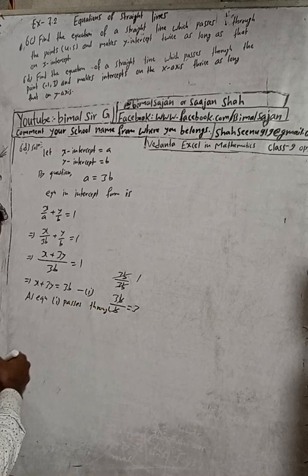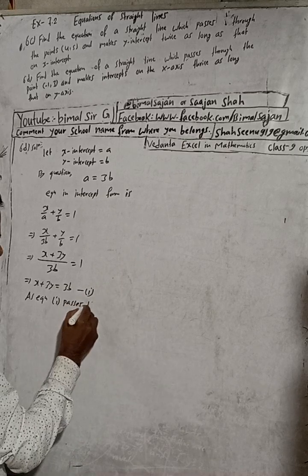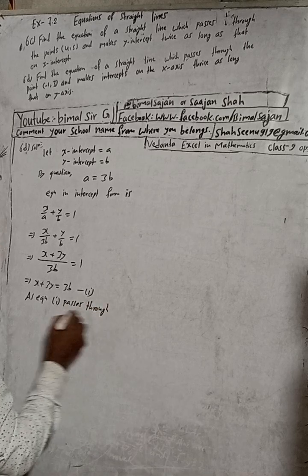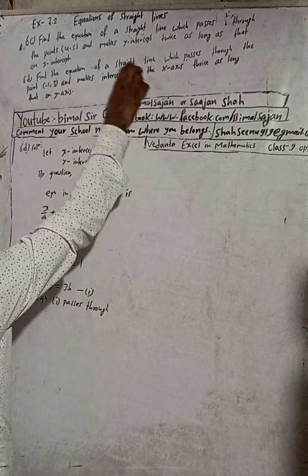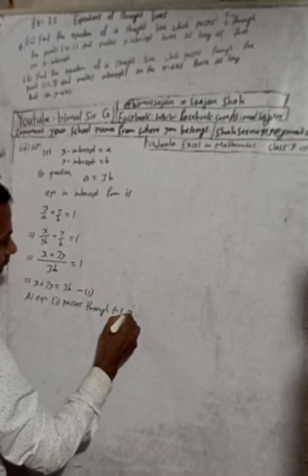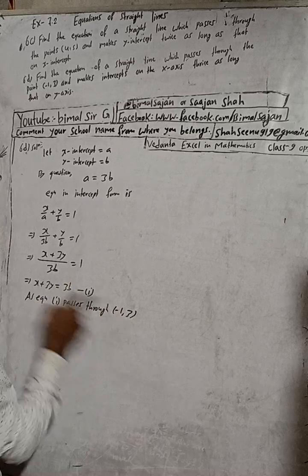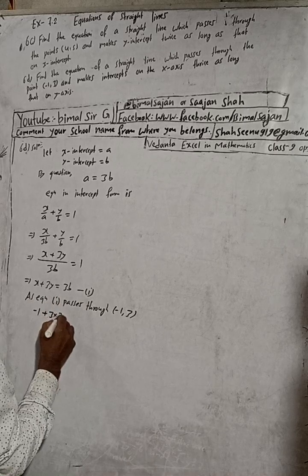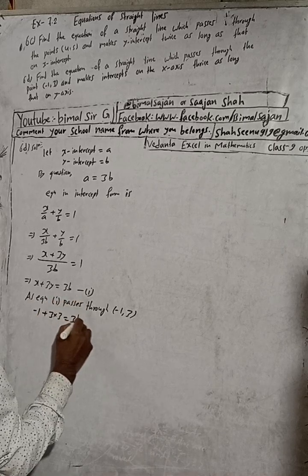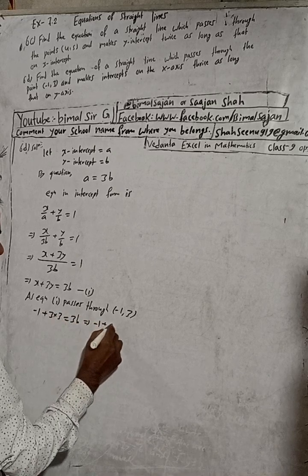Now equation 1 passes through the point x1 is equal to minus 1 and y1 is equal to 3. Put x equals minus 1 and y equals 3 in this equation. We get minus 1 plus 3 into 3 is equal to 3b.